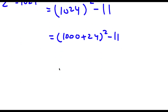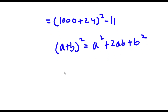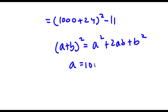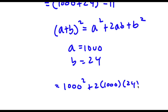Now, if I have something in the form (a + b) squared, this is simply equal to a squared plus 2ab plus b squared. So in this case, a is equal to 1000 and b is equal to 24. So this is going to equal 1000 squared plus 2 times 1000 times 24 plus 24 squared.